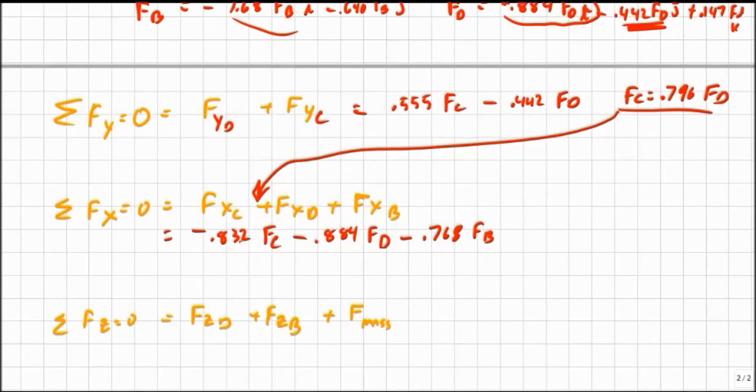And if you want to do this on paper, you can do that. And solve, so I get basically minus 1.54 F D equals 0.768 F B. And that leaves me with F D equals minus 0.499 F B.